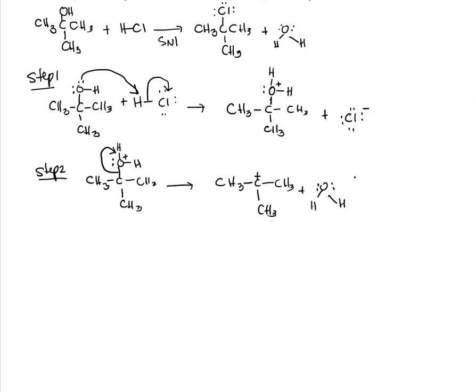And of course in step one we produced the Cl minus, and the Cl minus is what neutralizes the positive charge on the carbon. This now is the slow step.